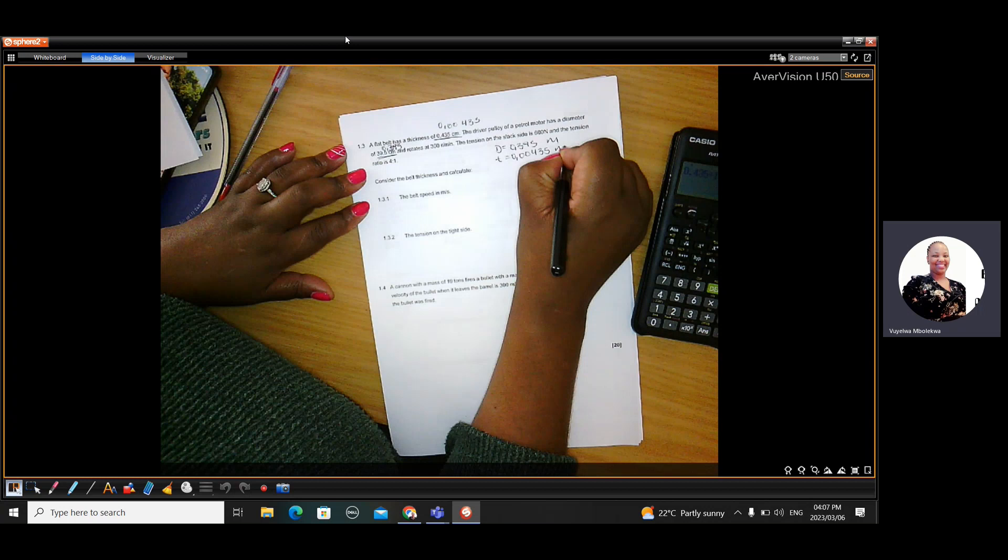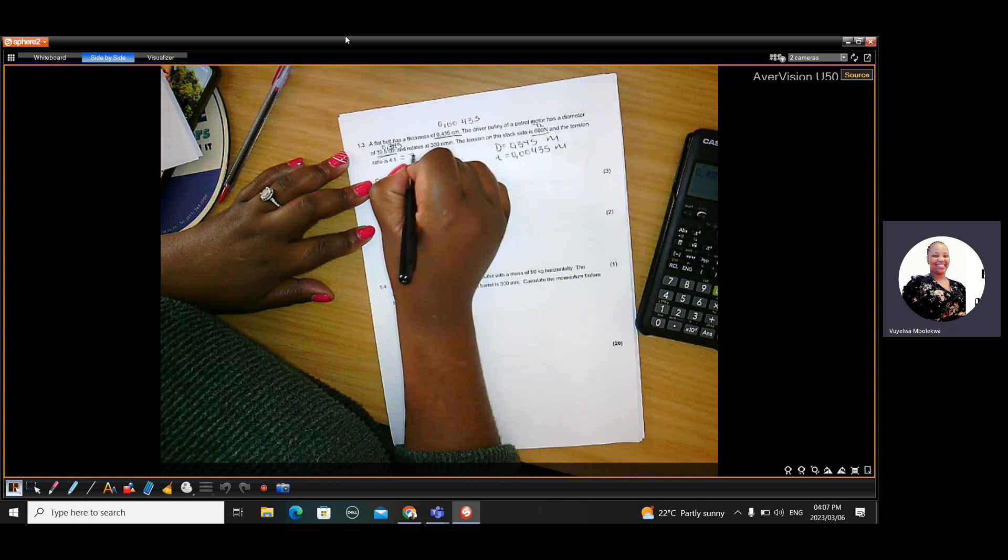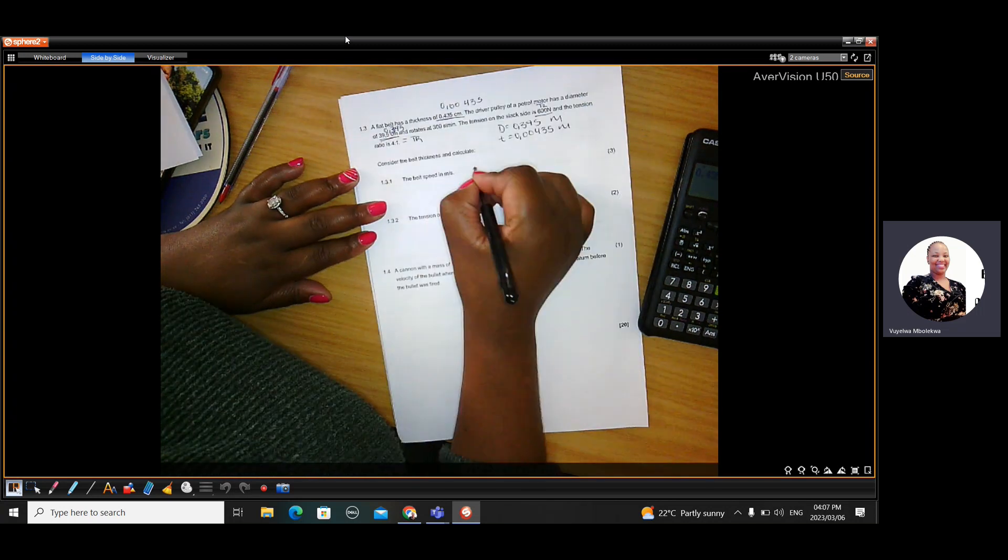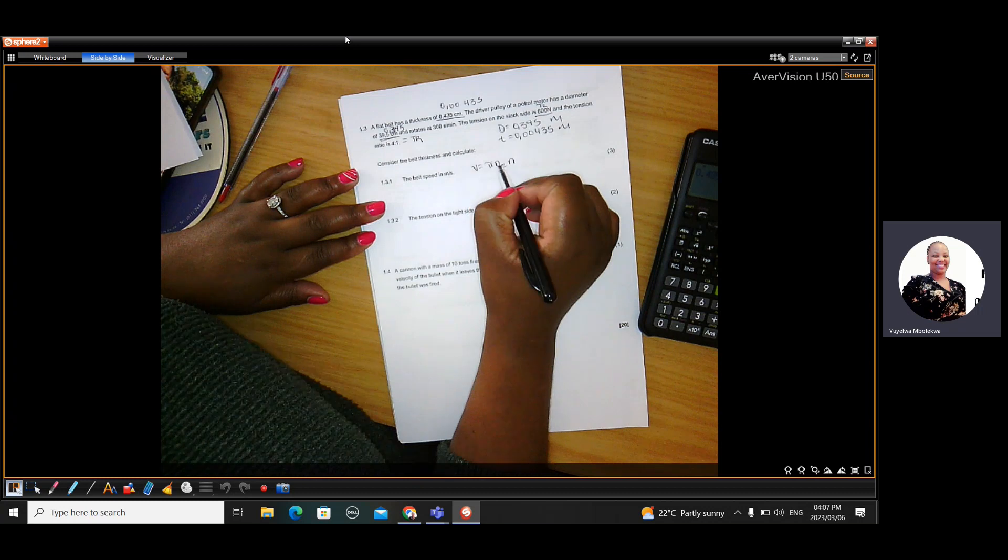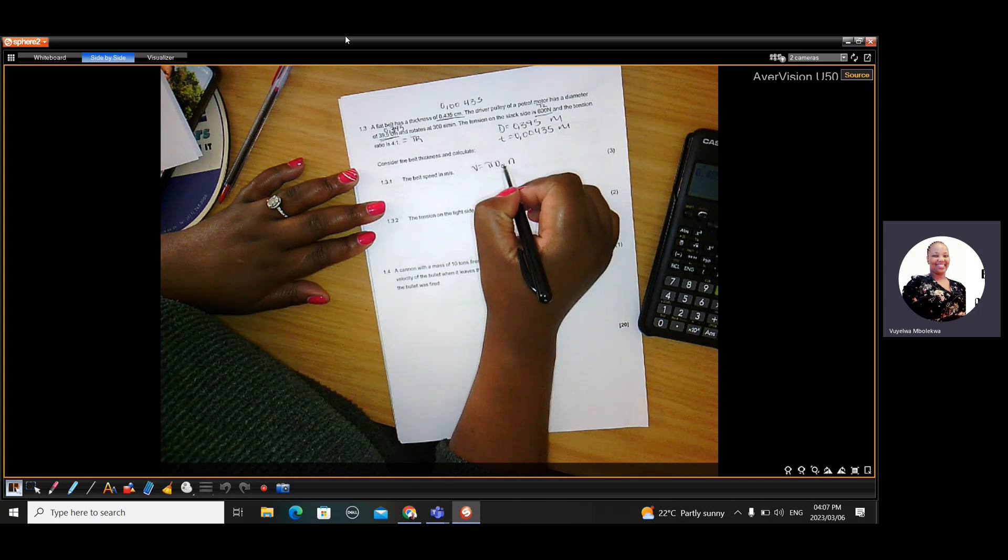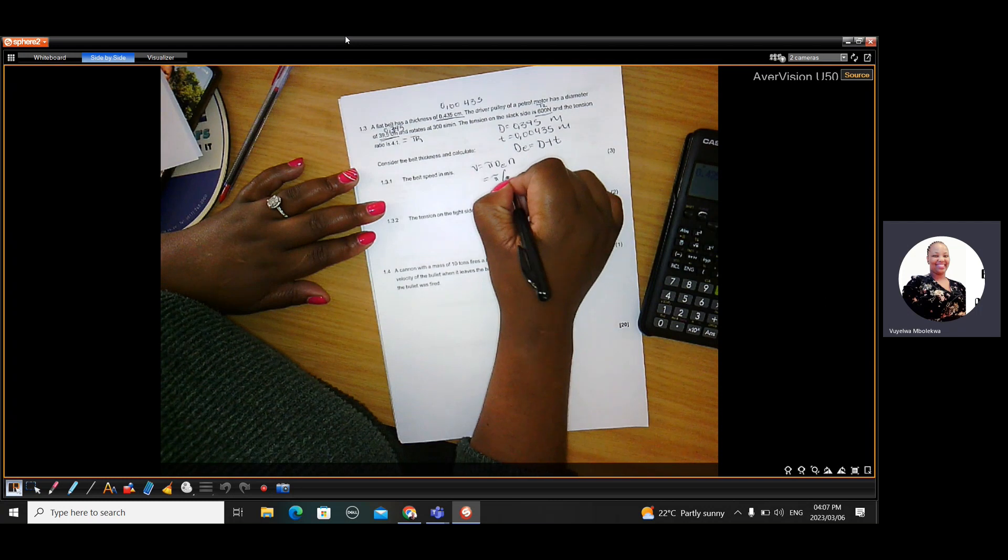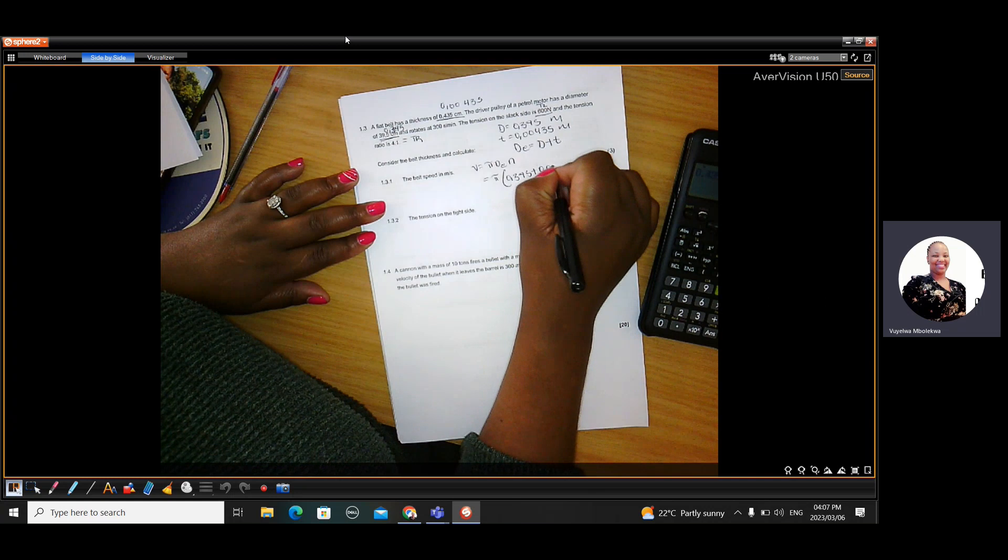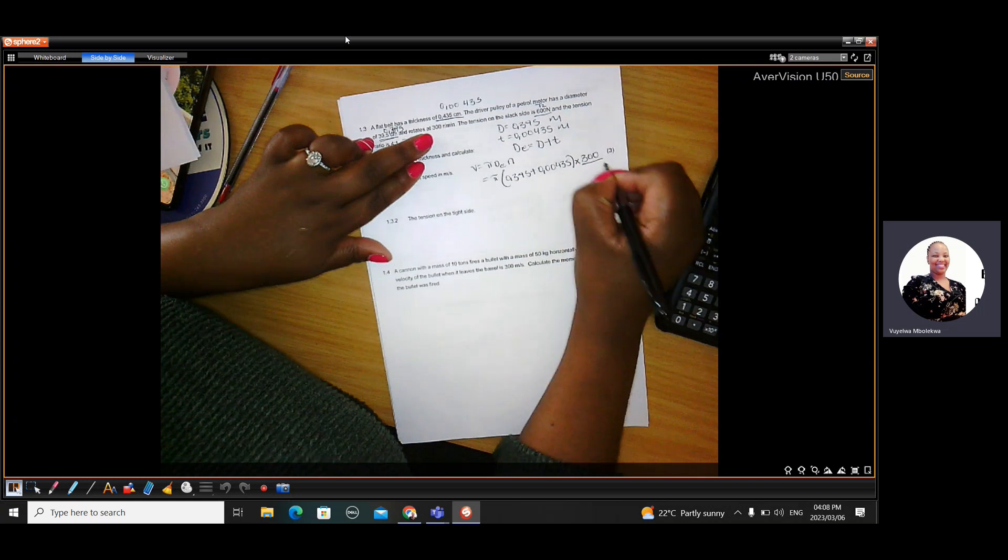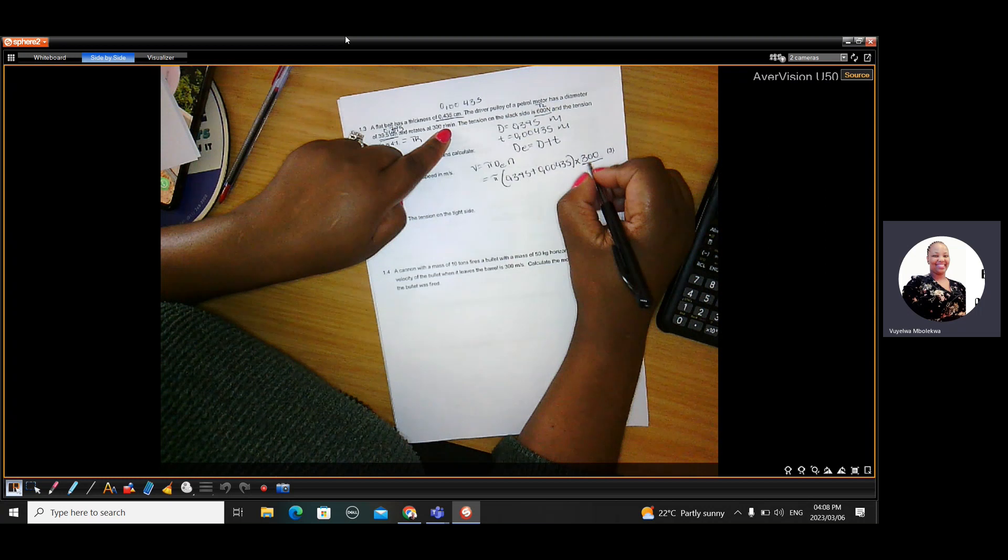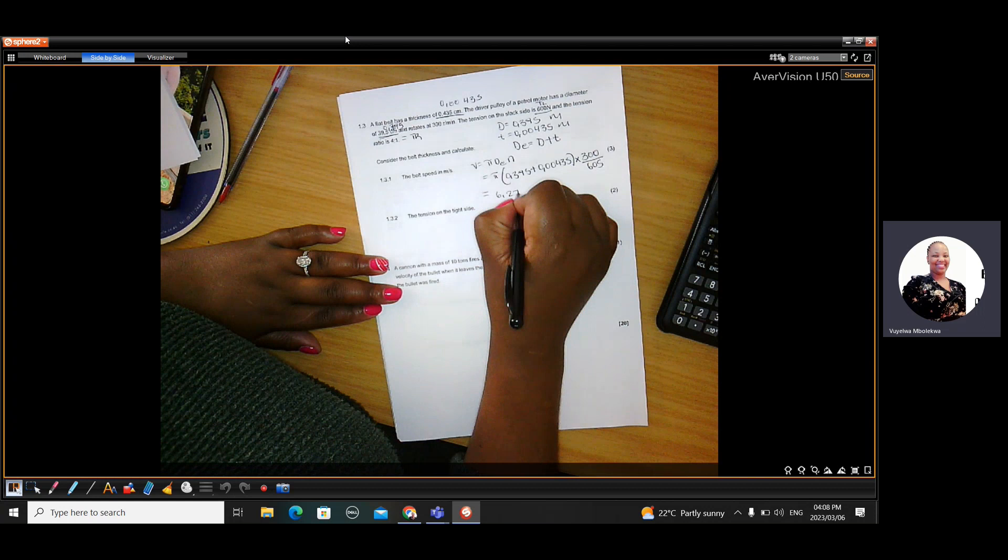The tension on this leg side is 600. So that is T2, the tension ratio. The four is to one. That is the tension ratio. So the first question says the belt speed in meters per second. So the formula says pi D E N. So when thickness is given, you use effective diameter. Effective diameter equals to diameter plus thickness. So the diameter is 0.395 plus the thickness 0.00435 times by N. That is N 300. But it must now be revs per second. So where one minute is, we substitute 60 seconds. So the final answer then would have been 6.273 meters per second.